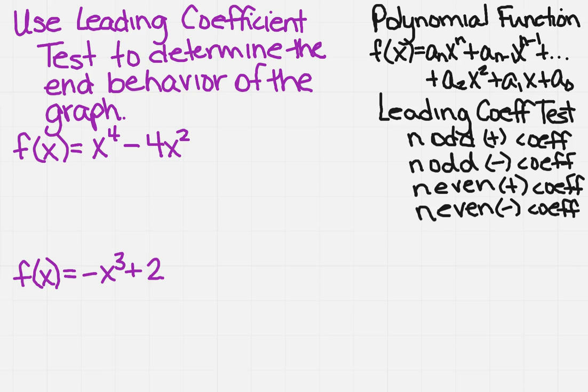Now what do I mean by the end behavior? Well the end behavior is related to when you draw the arrows on each end of your polynomial for where it's going. So we can talk about whether it's going to rise or if it's going to fall, on which side that's going to happen.